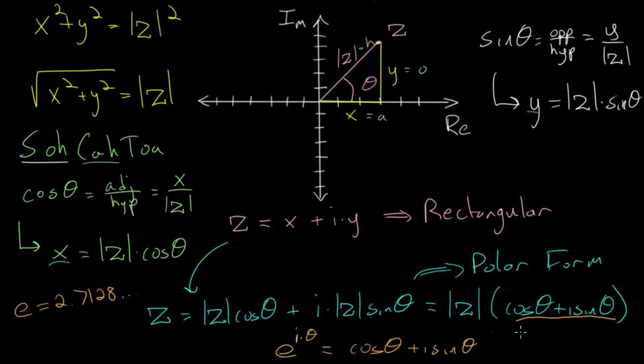And you raise this to i multiplied by an angle theta, this is equal to the cosine of theta plus i times by the sine of theta, meaning that we can rewrite z here, this complex number, in its polar form as the magnitude of z multiplied by e to the i times theta.